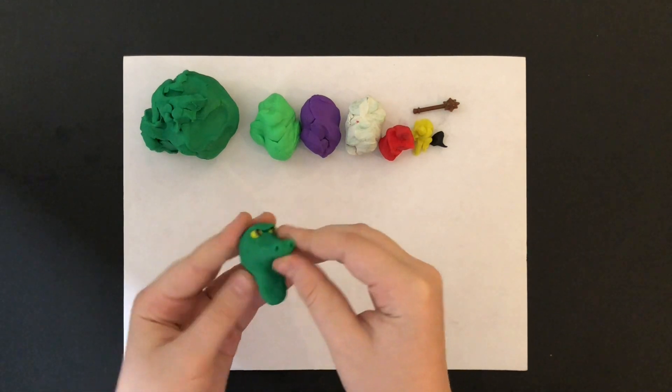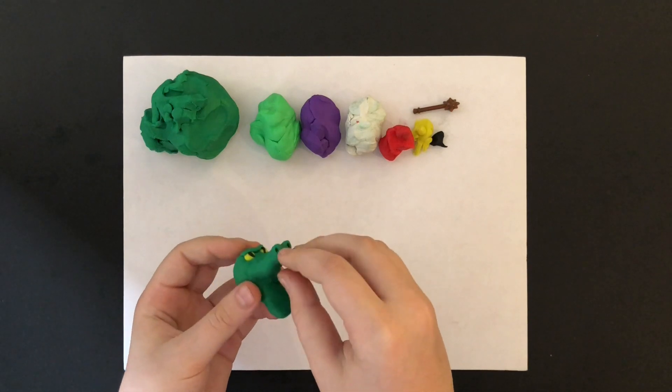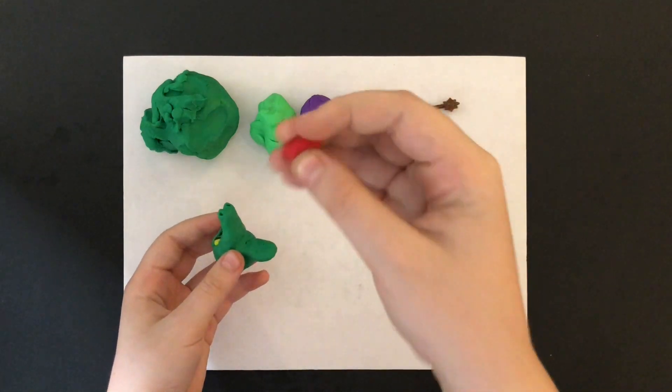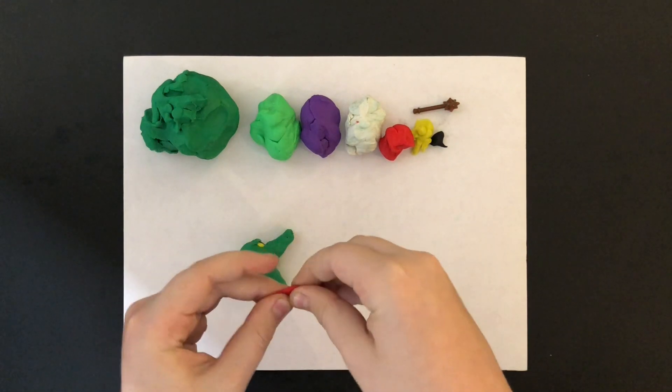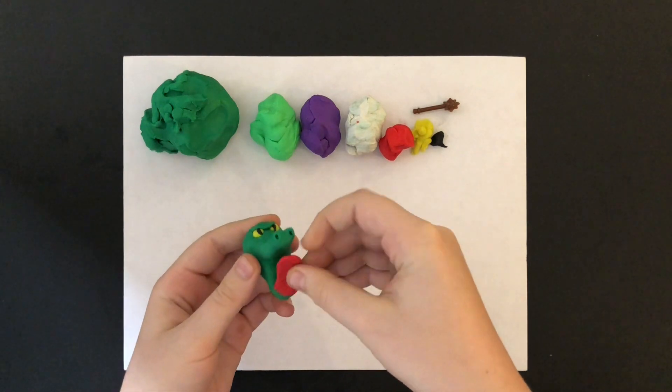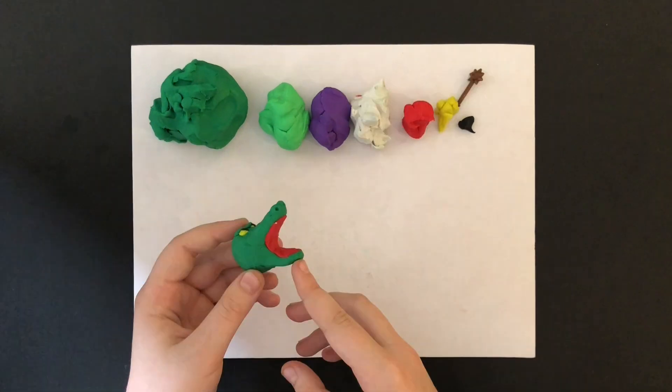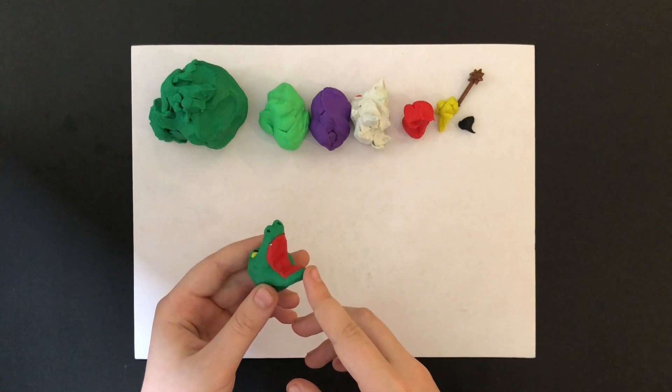I slightly adjust his jaw. In order to make the inside of his mouth for the next step, I use red clay. I grab a piece and make a longer flat shape. Then I place it inside his mouth. This is how it looks like after I place red clay inside his mouth.